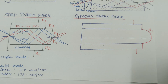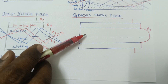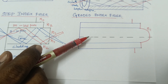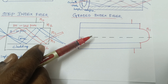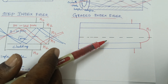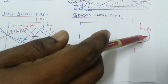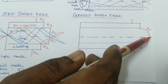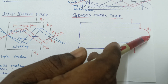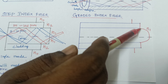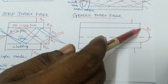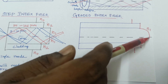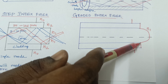The last type is graded index fiber. This fiber contains only multimode fiber — there is no single mode graded index fiber. In graded index fiber, the refractive index of the core is maximum along the fiber axis and gradually decreases towards the core-cladding interface. This gradual decrease towards the core-cladding interface is what defines graded index fiber.